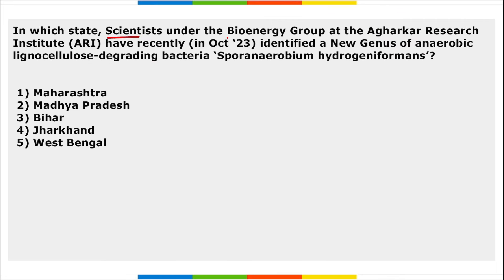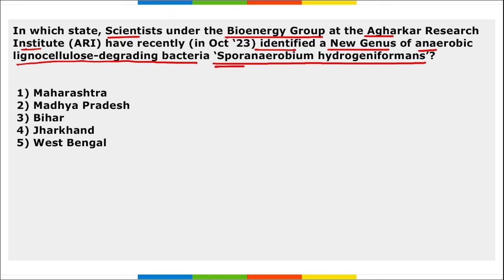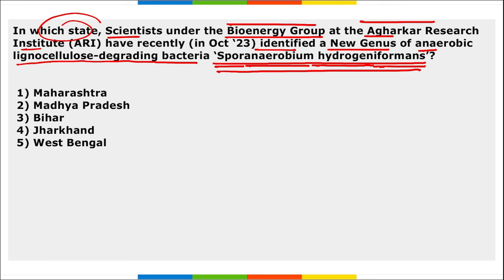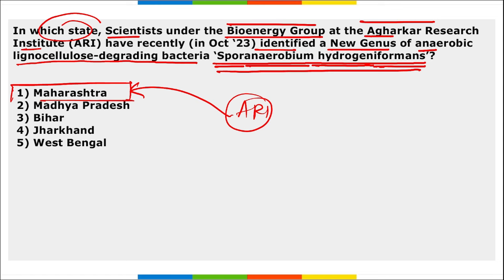Next: in which state did scientists under the bioenergy group at the Agarkar Research Institute recently identify a new genus of anaerobic lignocellulose-degrading bacteria named Sporanaerobium hydrogenoformans? The Agarkar Research Institute is located in Maharashtra, and that is where this new bacteria was discovered.